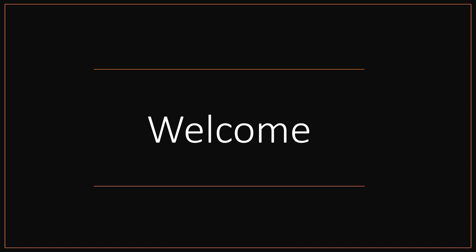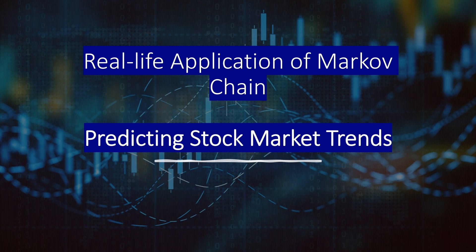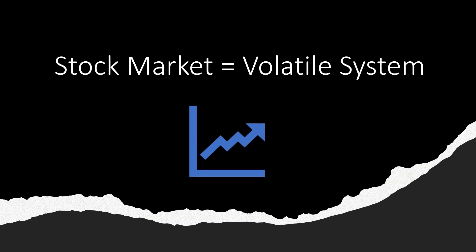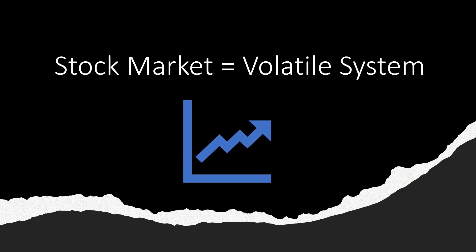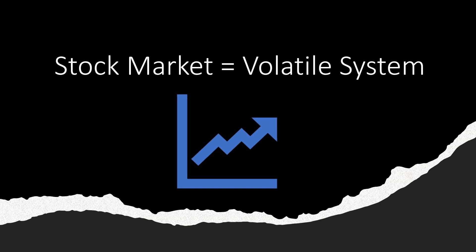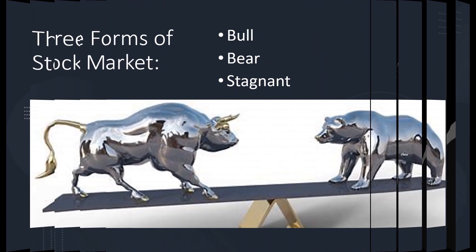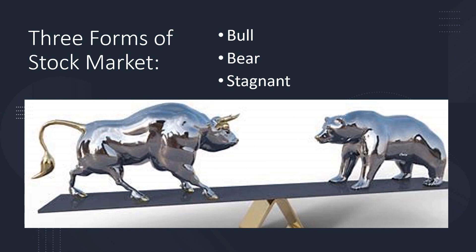Hello everybody, my name is Aeon Kumar Das. In this video I will show you how to use Markov chains to predict the stock market. The stock market is a volatile system with a high degree of unpredictability. Markov chains and their associated diagrams may be used to estimate the probability of various financial market climates and forecast the likelihood of future market circumstances.